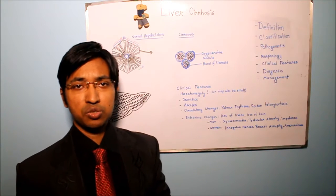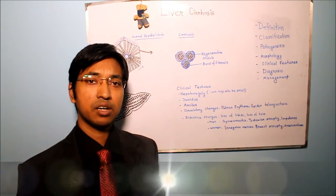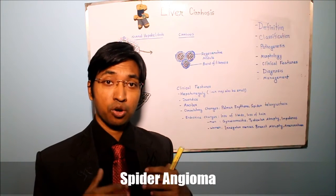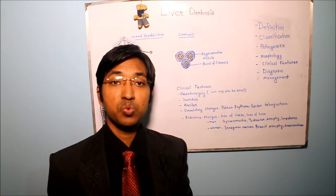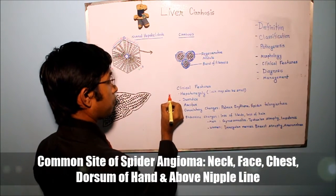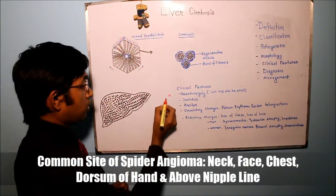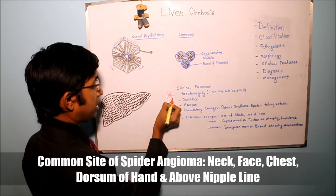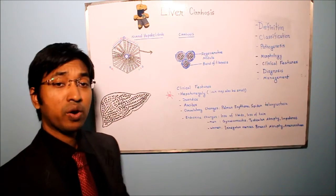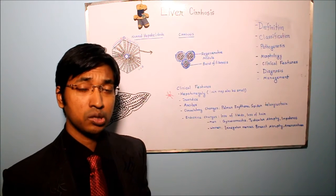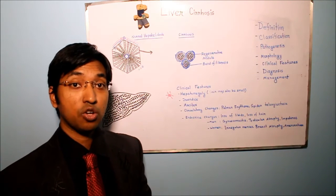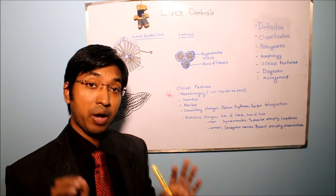Another skin manifestation that we may also see in liver cirrhosis is spider angioma. It is a central dilated pulsatile arteriole from which small vessels radiate, having the appearance of the legs of a spider. One or two spider angiomas may be found in normal individuals in about two percent of cases. However, when the number is more than two it is often suspected to be happening due to some pathological cause.